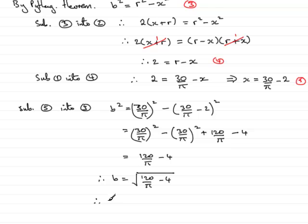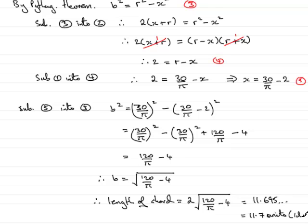And the length of the chord would be 2b, so therefore length of chord equals 2 times the value of b, so that would be 2 times the square root of 120 over pi minus 4. And if you work that out on a calculator, you get 11.695 and so on, which you could round to one decimal place, that would be 11.7 units. That brings us to the end then of that example. Thank you.